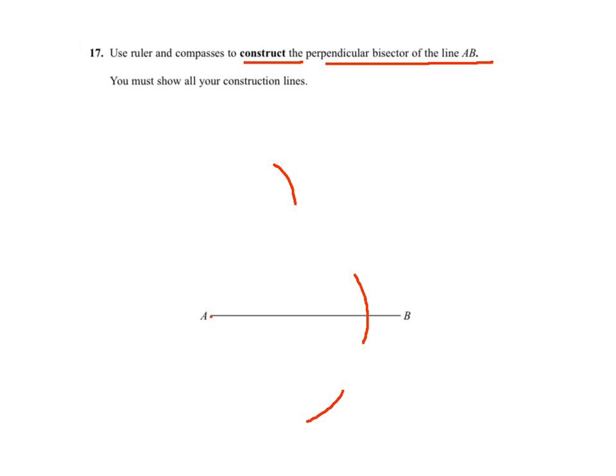Then you keep the size of your compass and you go to the other side and you draw an arc on this side, an arc on this side, an arc on this side, and you get your perpendicular bisector.